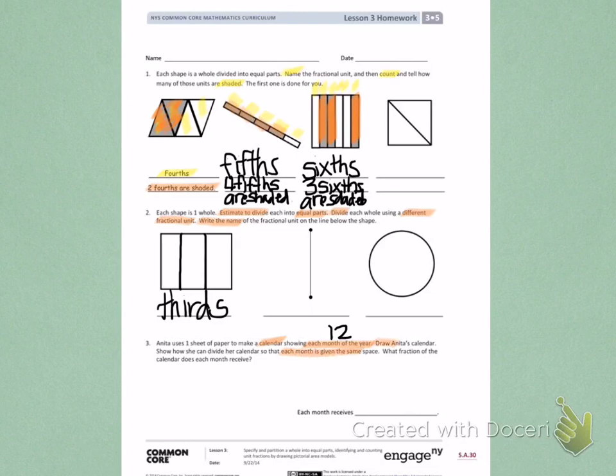So a calendar, if I were going to create it, would be on a piece of paper. The calendar needs to show every month. In this case, there are 12 months. So I need to divide this piece of paper into 12 equal parts.